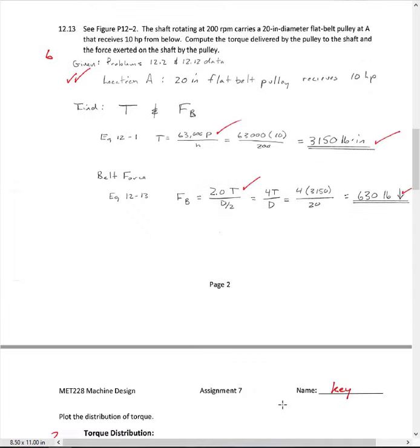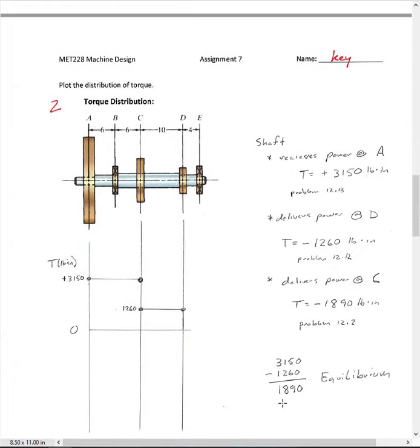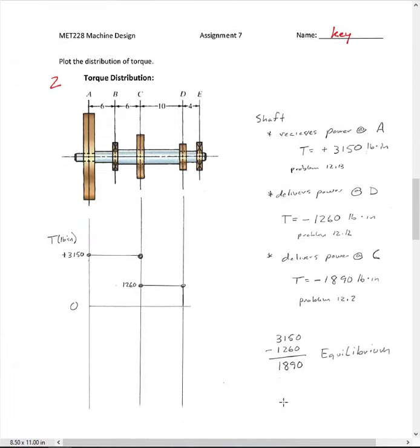Okay, so what I'm asking you to do now is to draw me the torque distribution. And really, it's pretty simple. It's kind of like a shear diagram. So we know from the three problems we have just done that the shaft receives power at point A at 3,150 inch pounds, and it delivers power at point D, and that's minus 1,260 pound inches. And it also delivers power at point C. Now, the way the problems were written, we had 10 horsepower coming in here, and then we had power being removed.